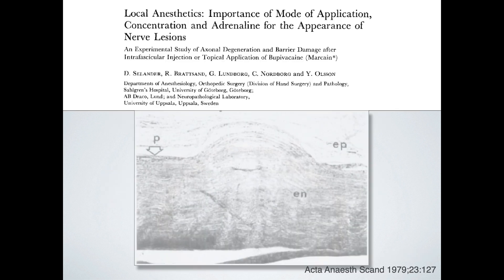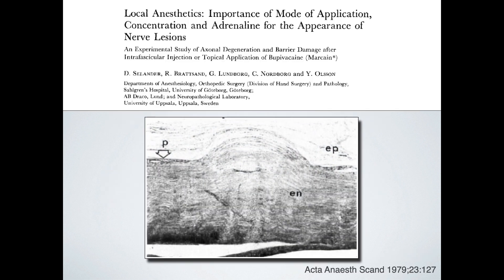This study by Dag Seelander and colleagues highlights that pressure gradient. The endoneurial fluid pressure is slightly higher than that found outside the fascicle, about 2 to 3 mmHg, and it's been proposed that this gradient may have evolved as a protective mechanism against contamination of the interfascicular environment by toxins. When the perineurium is breached, the endoneurial contents tend to herniate out of the fascicle, which is not ideal for nerve function.